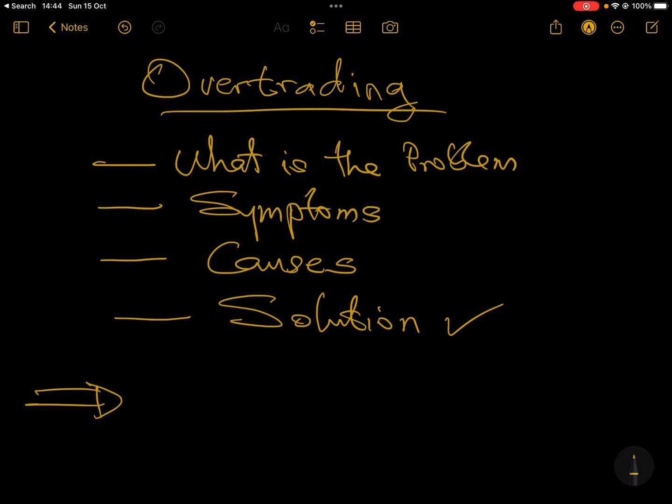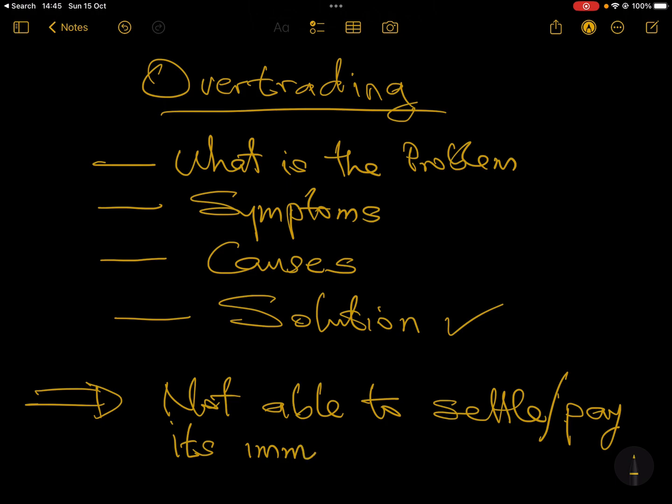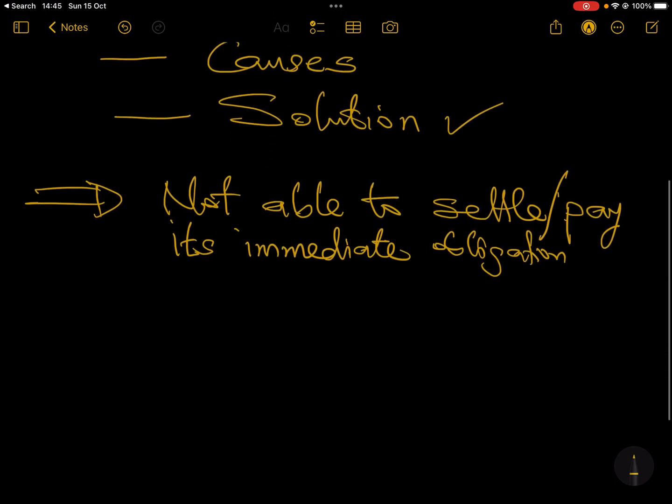What will you see for you to conclude that a particular company is over trading, and what is the cause. And when you know the root cause, then you can prescribe the solution. So what is over trading? It's not too complicated. Over trading just means that a company is not able to settle or pay its immediate obligations, usually the suppliers. So you have a company that is growing so much in turnover but it's not collecting its receivable, so it doesn't have cash. And no long-term funding as well.